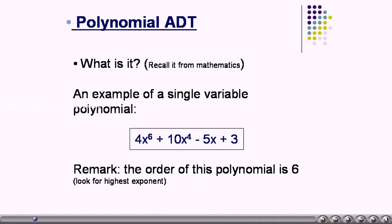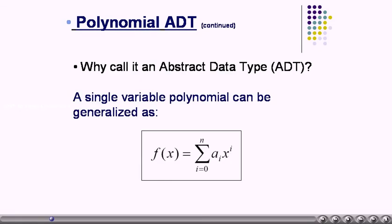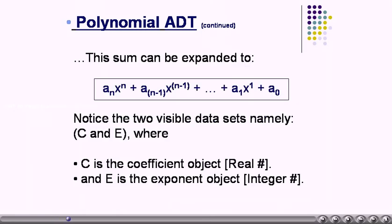Its order is normally called as 6, that is the highest exponent seen in the polynomial. A single variable polynomial can be generalized as f of x is equal to sigma, i is equal to 0 to n, a of i, and x to the power of i. When we expand this summation, we get a generalized polynomial: an x to the power of n, an minus 1 x to the power of n minus 1, etc.